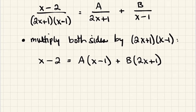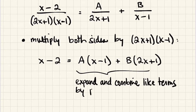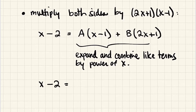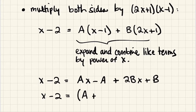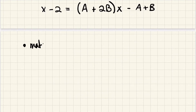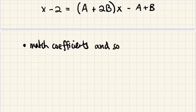A and B are both constants. We find them by comparing coefficients of powers of x on each side, so we need to expand and combine like terms by power of x. Distributing A gives Ax minus A, and distributing B gives 2Bx plus B. Combining by power of x: the coefficient of x is A plus 2B, and the constant term is negative A plus B.